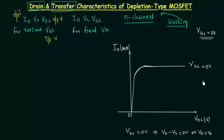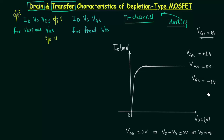In depletion type MOSFET, we can either increase or decrease VGS from 0V — we can make it positive (e.g., +1V) or negative (e.g., -1V). In JFET, we do not have this option; VGS can only be made negative. This is one advantage of the depletion type MOSFET over the junction field effect transistor.